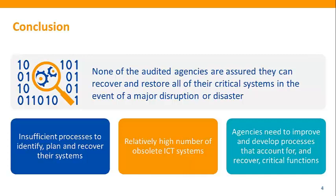None of the audited agencies have sufficient assurance that they can recover and restore all of their critical systems to meet business requirements in the event of a disruption. Agencies do not have sufficient and necessary processes to identify, plan and recover their systems. Compounding this is the relatively high number of obsolete ICT systems agencies are still using to deliver some of their critical business functions. Agencies need to significantly improve and develop well-resourced and established processes that can recover their critical business functions following a disruption.